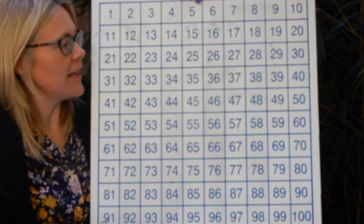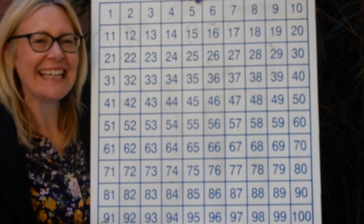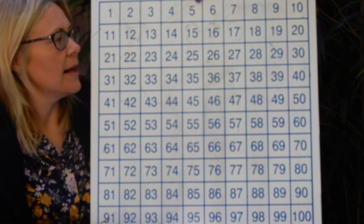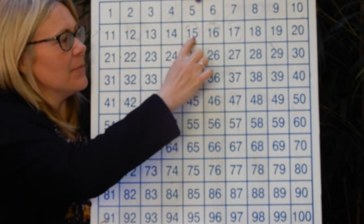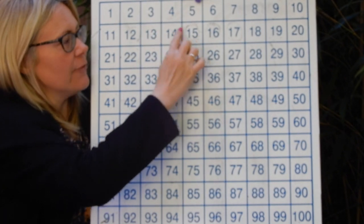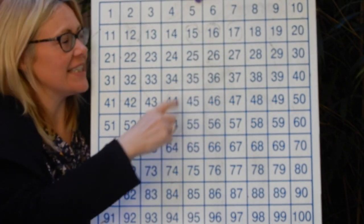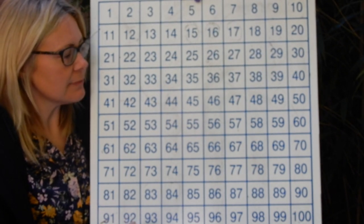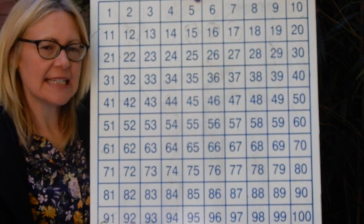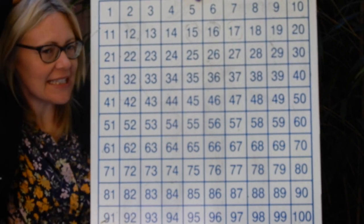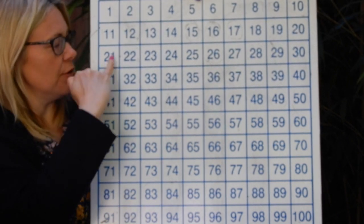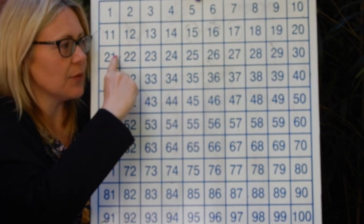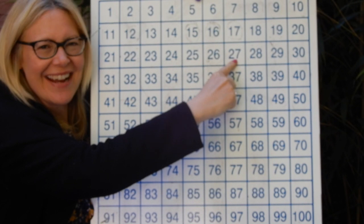Put your finger on your 100 square and point to number 7 - there it is. Can you now point to the number 14? Here are all our teen numbers - they have one lot of ten in front of every number. So 14 - there it is.